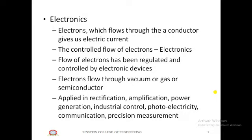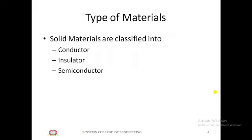The controlled flow of electrons is achieved by electronic devices. To understand electronic devices, we need to know the types of materials. There are three types: conductor, insulator, and semiconductor. Conductors have abundant free electrons so conductivity is high. Insulators have hardly any free electrons so conductivity is low. Semiconductors have conductivity between conductor and insulator.